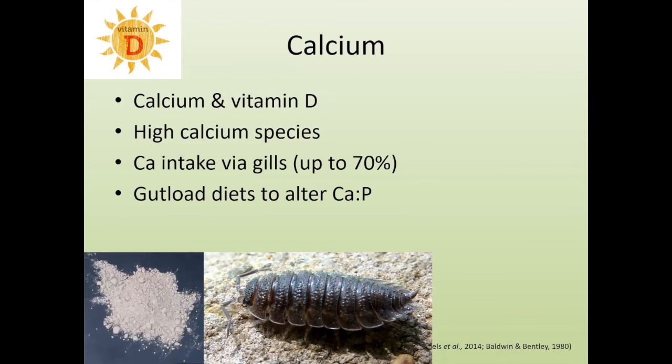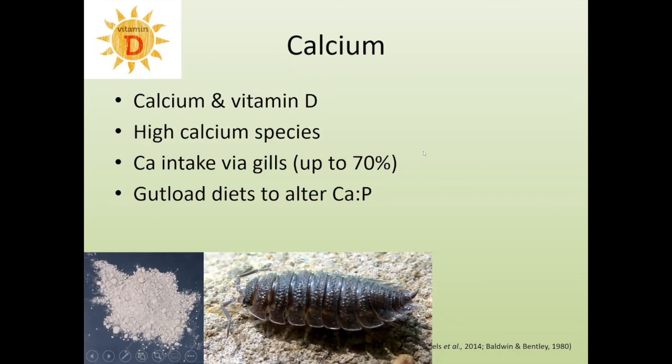Gut load diets can definitely be used to alter the calcium-to-phosphorus ratio in insects. While we are still figuring out exactly why it works, there is good reason to include calcium in the diet of insects two to three days before feeding them off — and this is a useful approach.